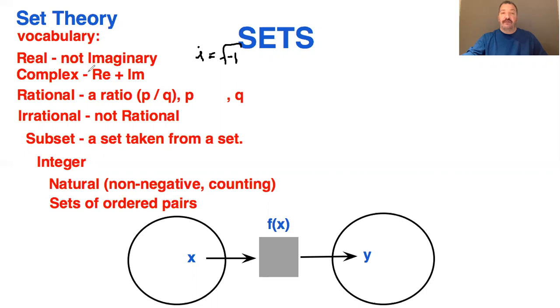Complex numbers have both real and imaginary components, so you'll see something like a plus bi or a minus bi. A minus bi is referred to as the complex conjugate of a plus bi, but that's another story.